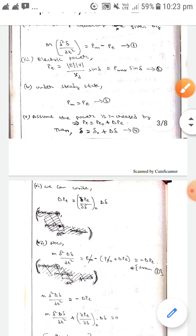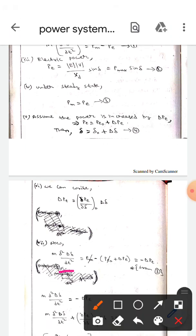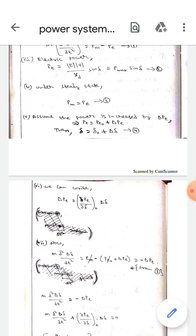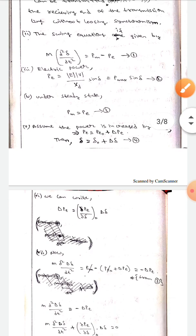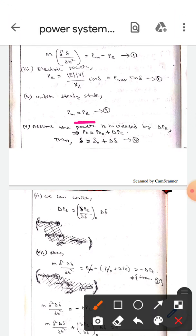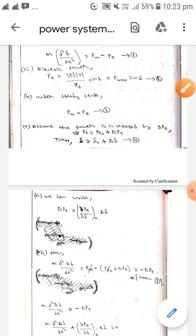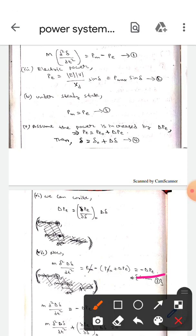m·d²Δδ/dt² = Pm - Pe0 - ΔPe. Here, we know that Pm equals Pe0 now, so we can cancel these two. Then only minus ΔPe will be remaining.